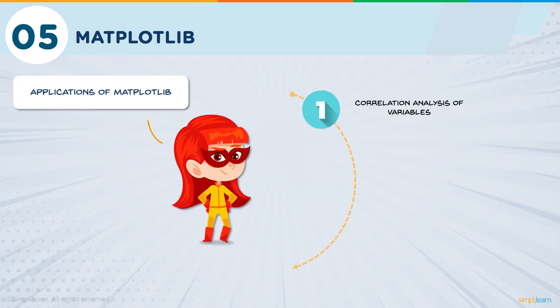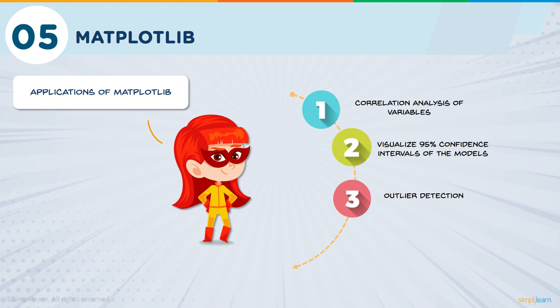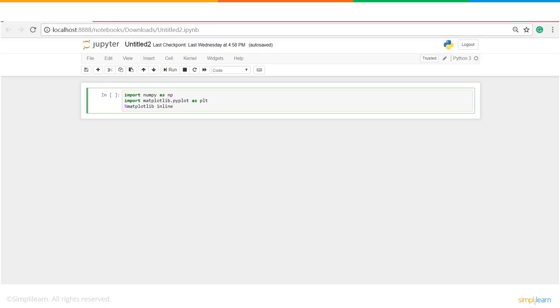Let's talk about the applications of Matplotlib. It's important to discover unknown relationships between variables in your dataset, and this library helps visualize correlation analysis of variables. In machine learning, we can visualize the 95% confidence interval of the model to communicate how well the model fits the data. Matplotlib also finds its application in outlier detection using scatterplots, and in visualizing the distribution of data to gain instant insights.